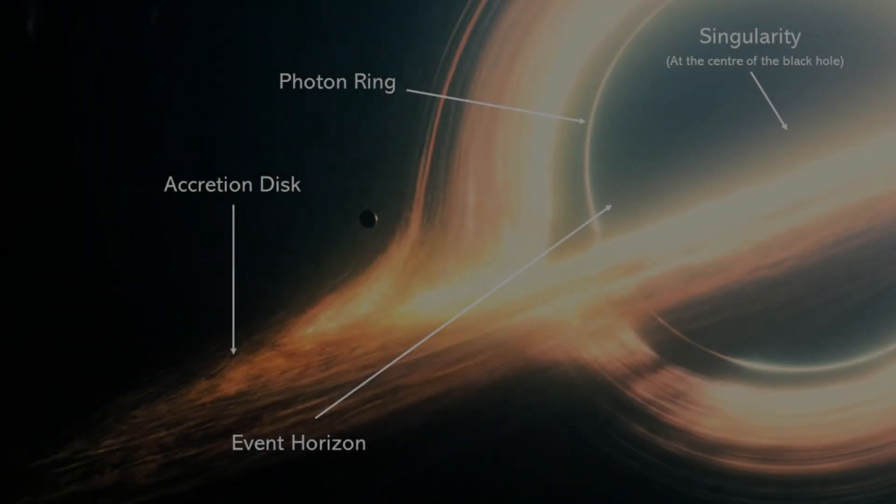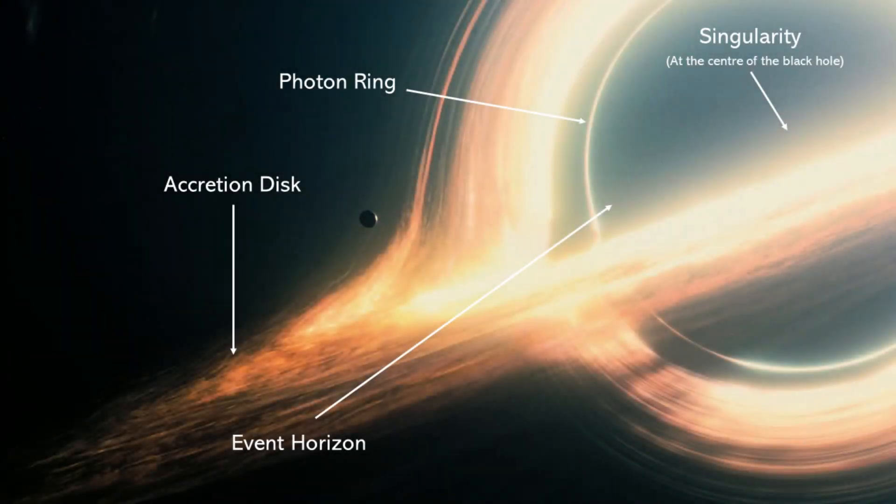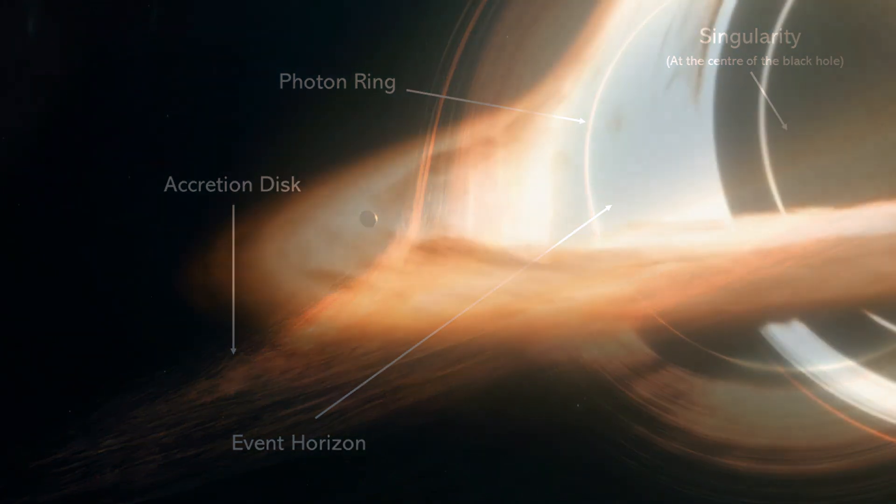The photon ring is a fascinating and relatively recent concept in the study of black holes. It refers to a specific region around a rotating black hole where the gravitational forces are so strong that photons, particles of light, can be trapped in stable, nearly circular orbits.